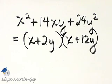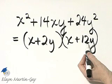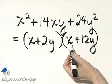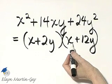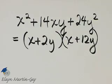I'll let you check the middle term. Or let me go ahead and do that. The outside is 12xy. The inside product is 2xy. And 12 plus 2 is 14. That is our correct factorization.